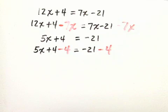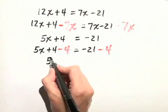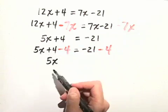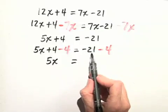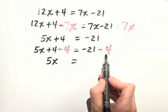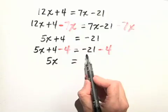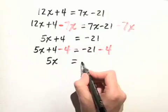When we simplify, on the left, we just have 5x because the plus 4 and minus 4 add up to 0. Equals, on the right-hand side, negative 21 minus 4 is just negative 25 because it's like negative 21 plus another negative 4.